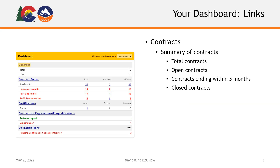The contract section of your dashboard displays a summary of the contracts your organization is involved with. These will be displayed in categories of total contracts, open contracts, contracts ending within three months, and closed contracts. If you click the underlined contracts link in your dashboard, it will take you to a list of all your active contracts where, by selecting View beside any contract, you will be able to view and manage the records for that specific contract.